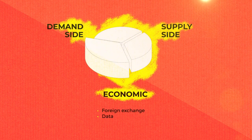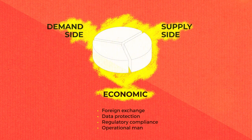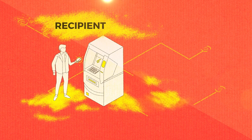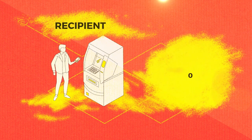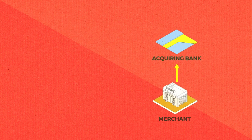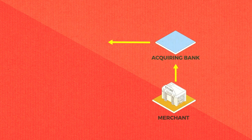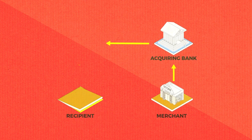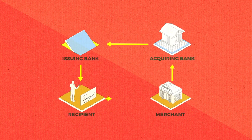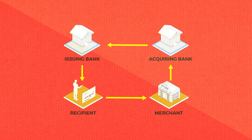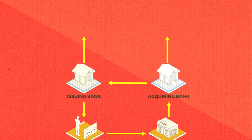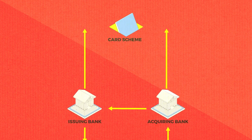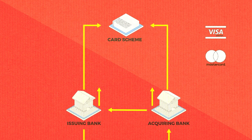The back-end costs of foreign exchange, data protection, regulatory compliance and operational management. When a customer or recipient — in aid terms — uses a prepaid card to obtain cash from an ATM or pay for goods at a store, four main parties are involved: the merchant or ATM; the merchant's bank, the acquiring bank or ATM owner; the recipient and the aid agency's bank, the issuing bank. To make the system work, the acquiring bank and the issuing bank have a licensing agreement with the card scheme function of companies such as Visa, MasterCard and UnionPay.